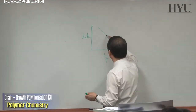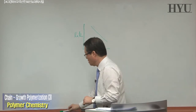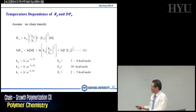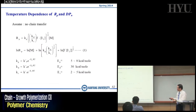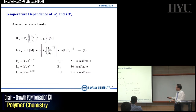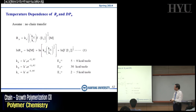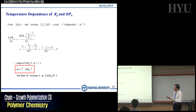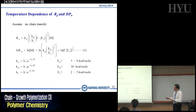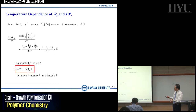You can rewrite the equation to show the temperature effect. Ep is the propagation activation energy, Ed is decomposition, and Et is termination. Scientists have measured the activation energies, which range from 2 to about 30 kcal/mol depending on the mode. For propagation it ranges from 5 to 8 kcal/mol, decomposition is about 30 kcal/mol, and termination is in the range of 2 to 5 kcal/mol, and these are all positive.